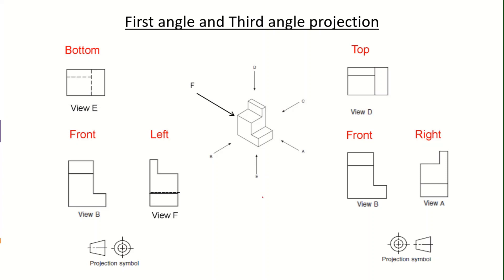Looking at the same solid model image and its different directions, the first angle projection method shows the front view when looked at from direction B. To the left of that solid component is the view from F, kept on the right side. The view from the bottom shows hidden lines or dotted lines, because when we look at this component from direction E we are not able to see certain surfaces, so all three surfaces are indicated in the bottom view as small and larger rectangular strips.